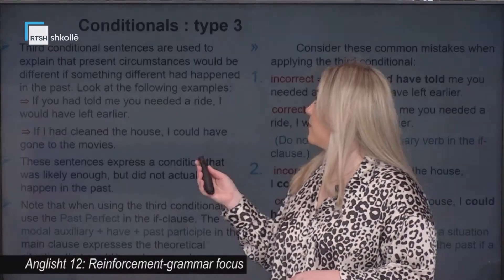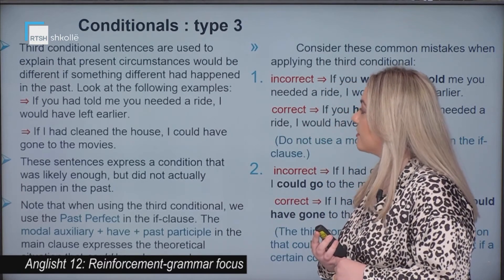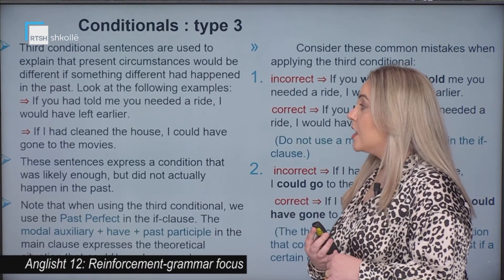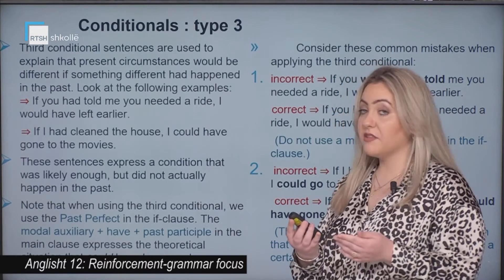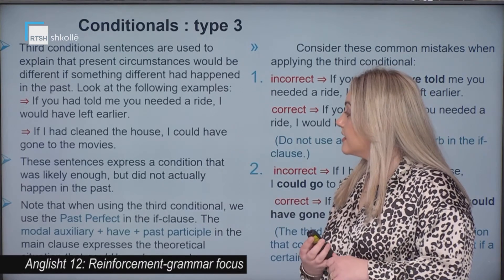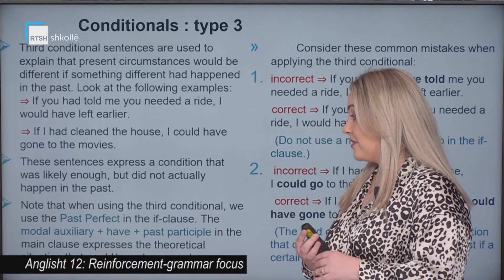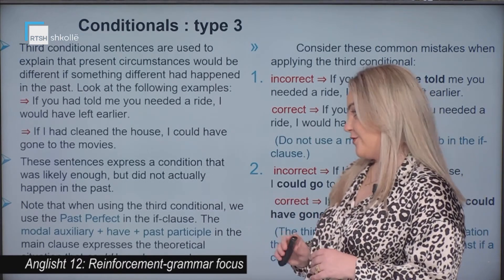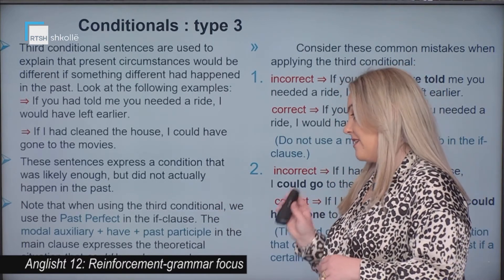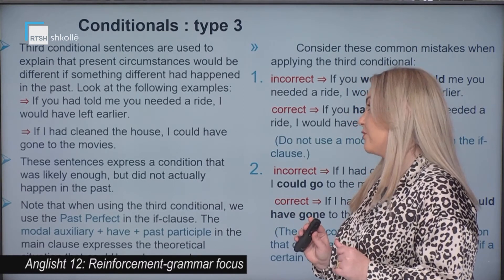Conditional type three. Third conditional sentences are used to explain that present circumstances would be different if something different had happened in the past. For example, if you had told me you needed a ride, I would have left earlier. These sentences express a condition that was likely enough but did not actually happen in the past. When using the third conditional, we use the past perfect in the if clause, and modal auxiliary plus 'have' plus past participle in the main clause.